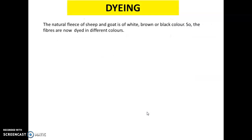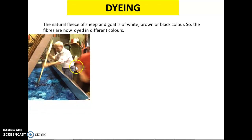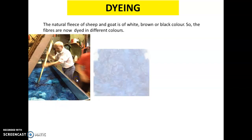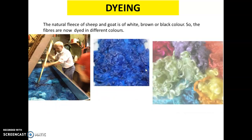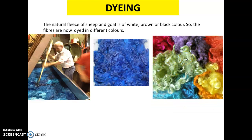Step 6 is dyeing. The natural fleece of a sheep is white, brown, or black. Some fibers are dyed in different colors. Here is a tank used to dye fibers on a large scale, and the result is dyed fibers of various colors.